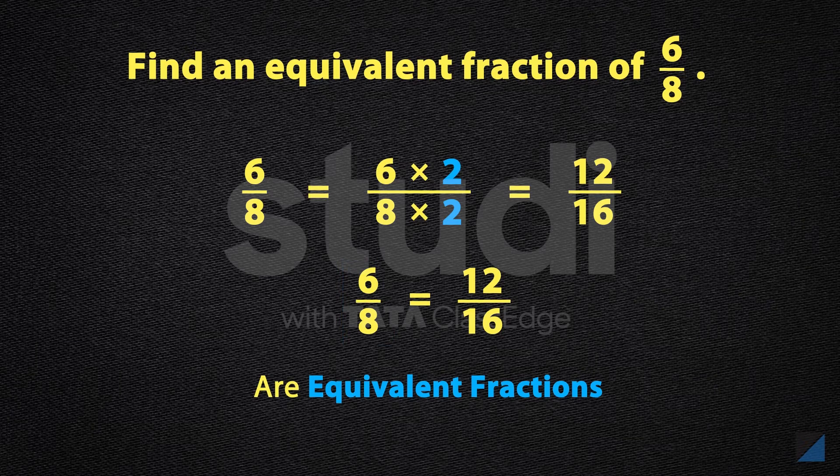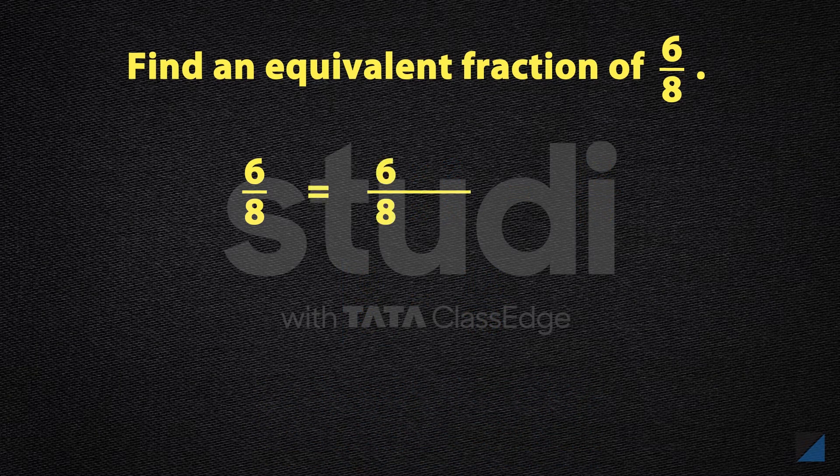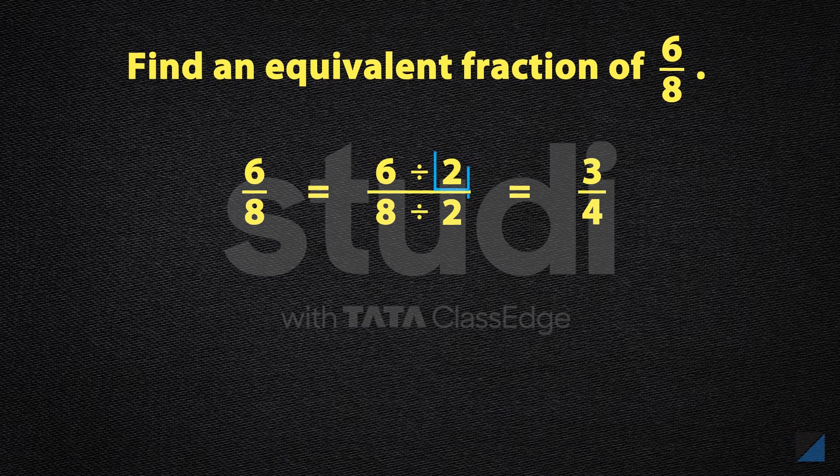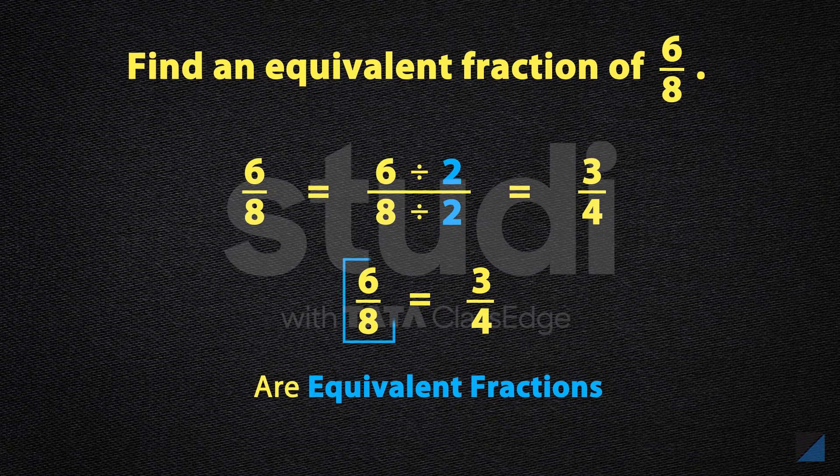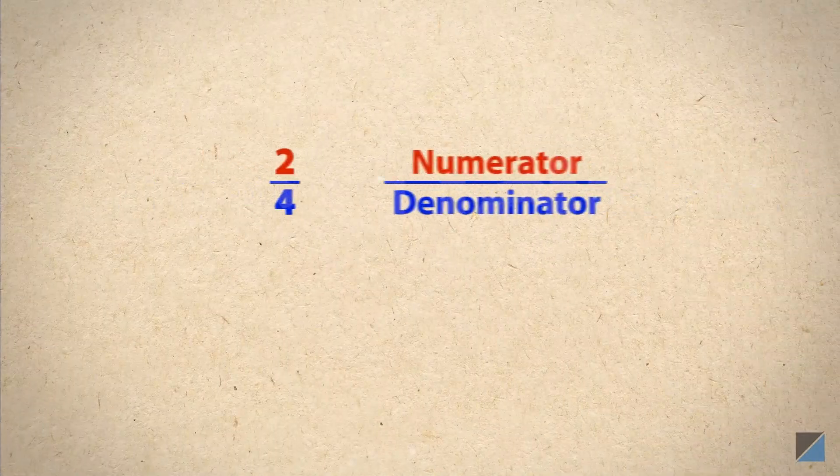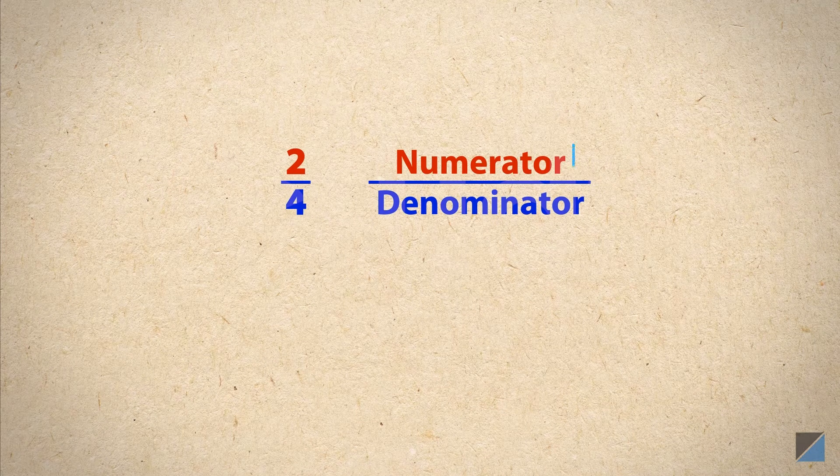We can also find an equivalent fraction by dividing the numerator and the denominator by the same number. So three fourths is also an equivalent fraction of 6 upon 8. So far we saw fractions where the top number or the numerator is smaller than the bottom number or the denominator. Such fractions are called proper fractions.